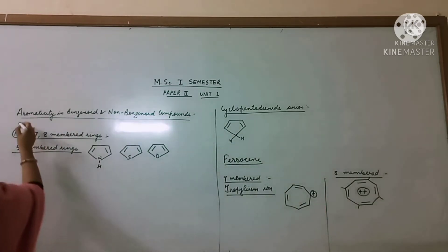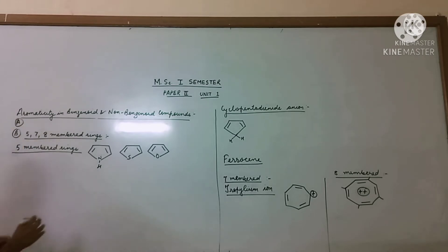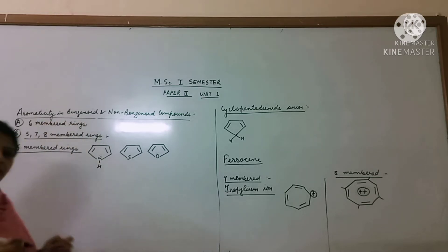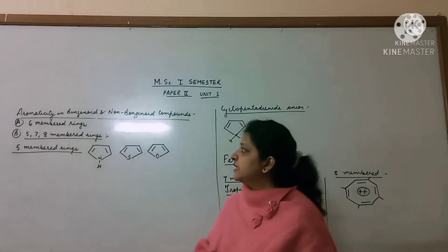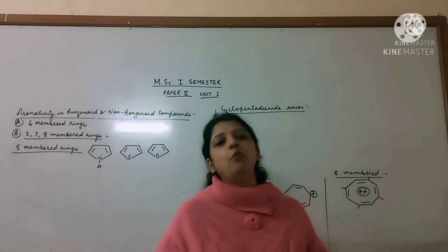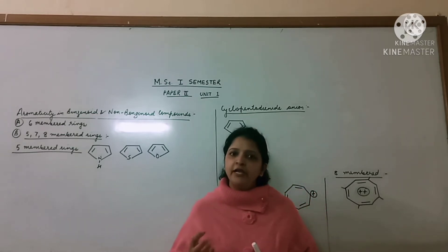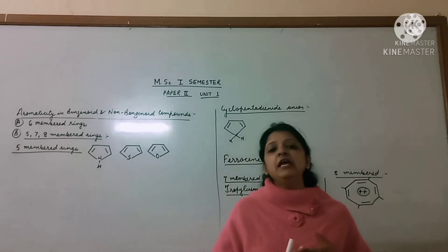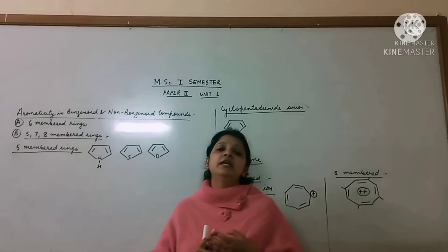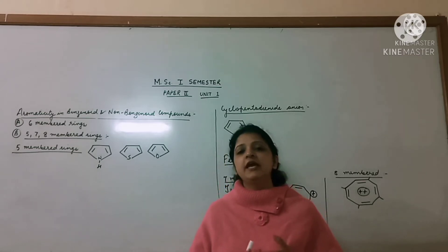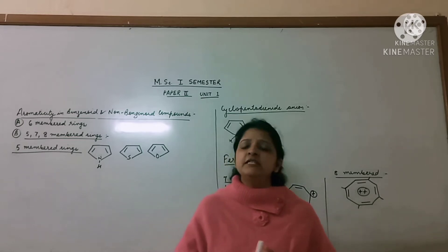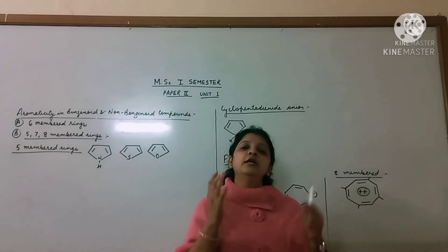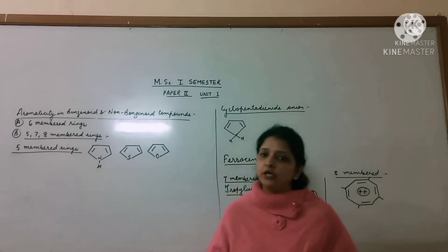Point A, which we studied in our last video lecture, is 6-membered rings. In the 6-membered rings, we examined the aromaticity of all molecules of benzene. With benzene, there are 6 atoms present. There are also heterocyclic analogs of benzene like pyridine, and fused aromatic rings such as naphthalene, anthracene, and phenanthrene. These are all aromatic resonating structures. In one ring, the aromatic sextet will be present and it will be aromatic.